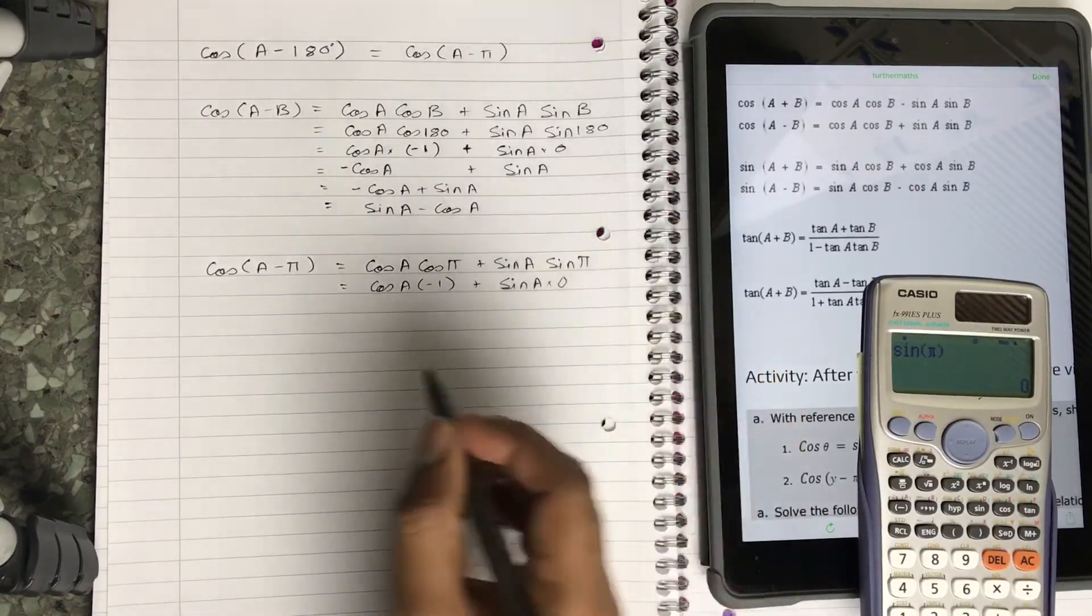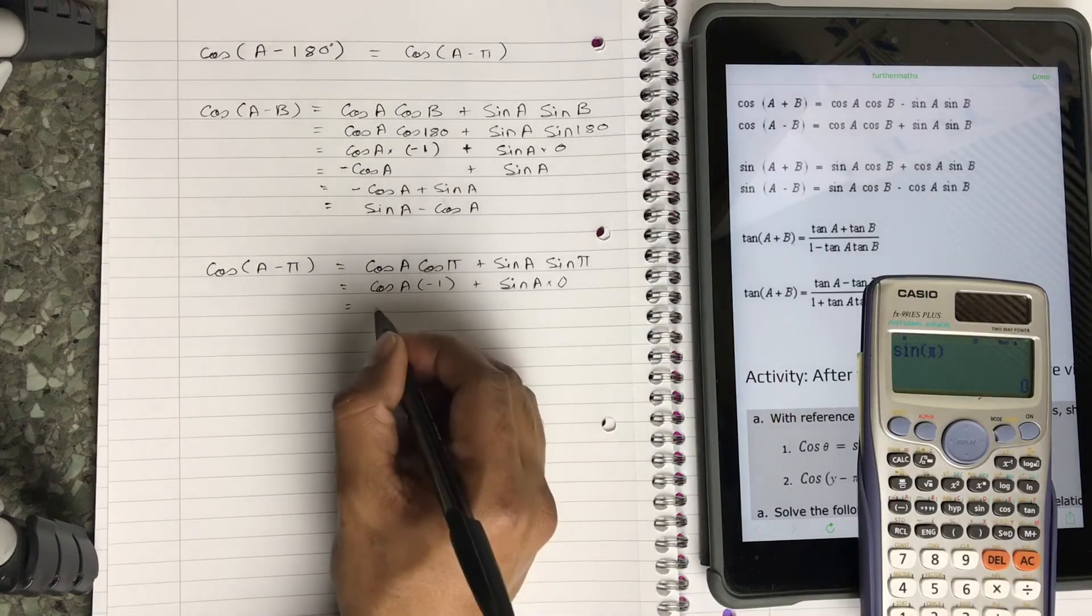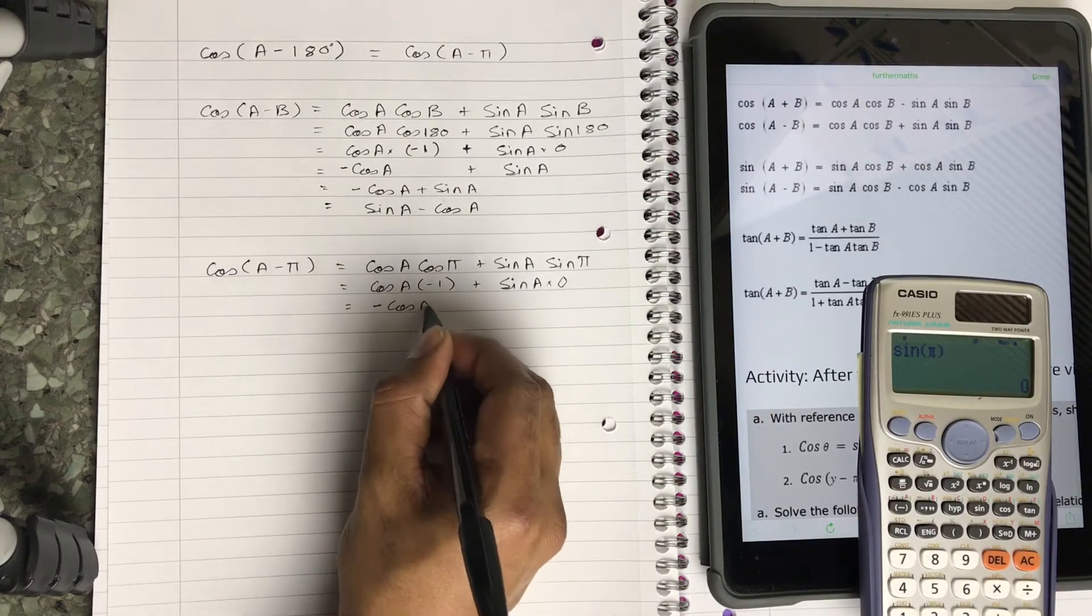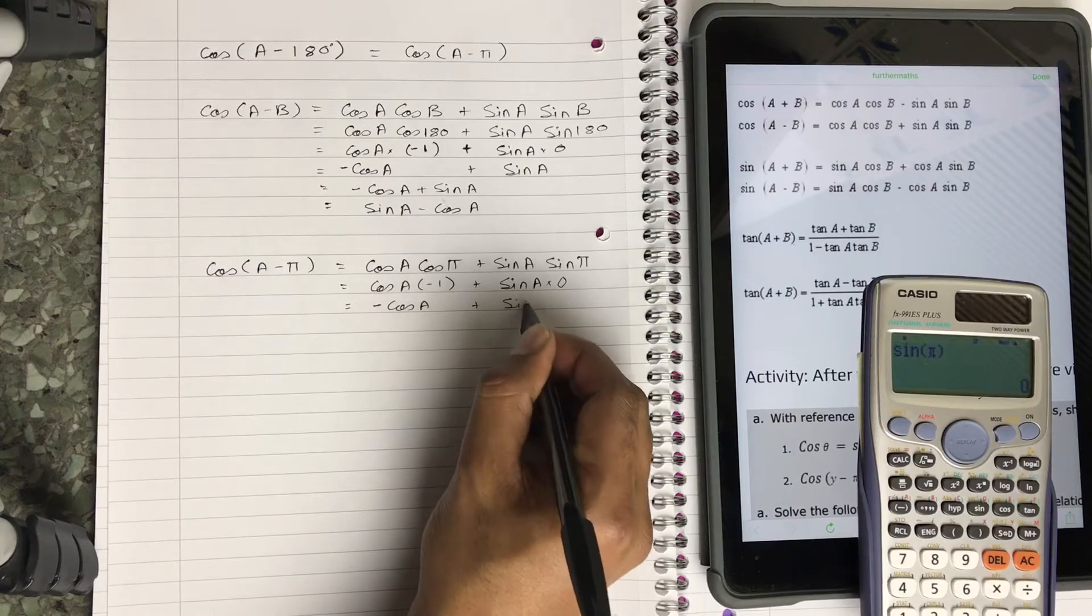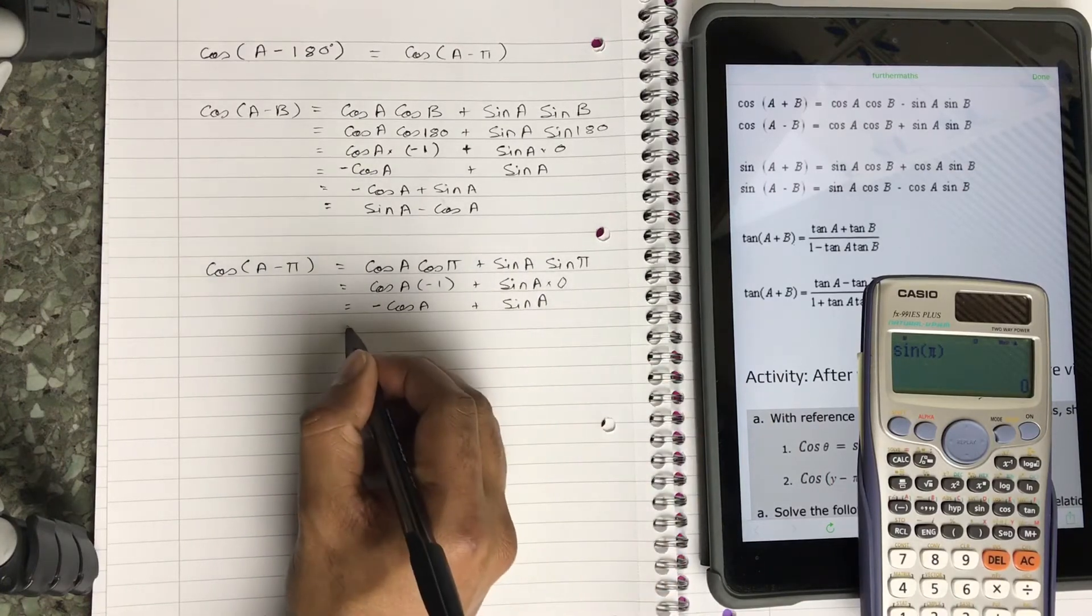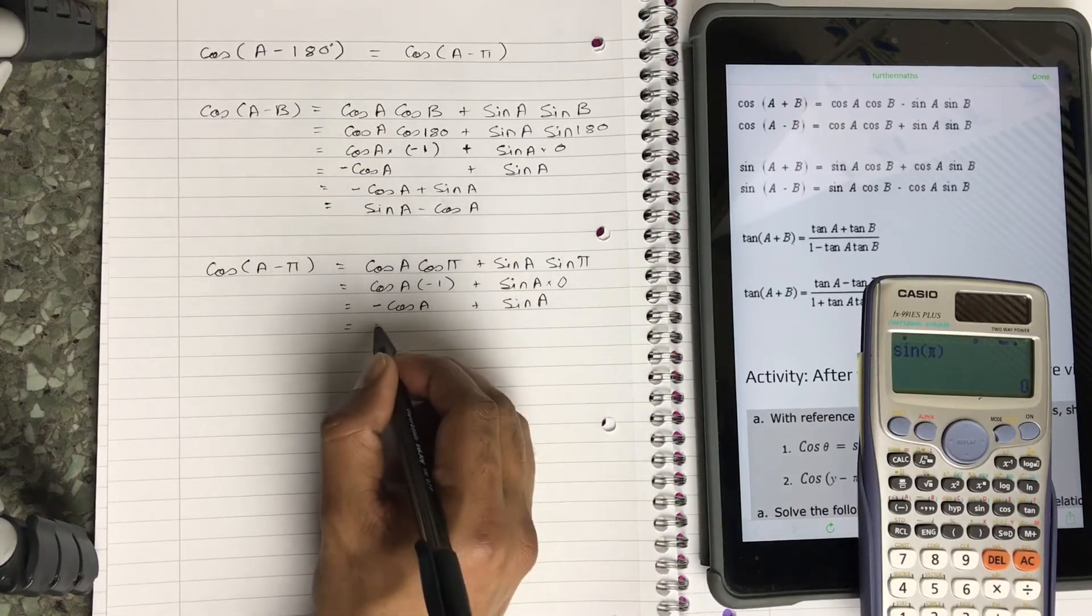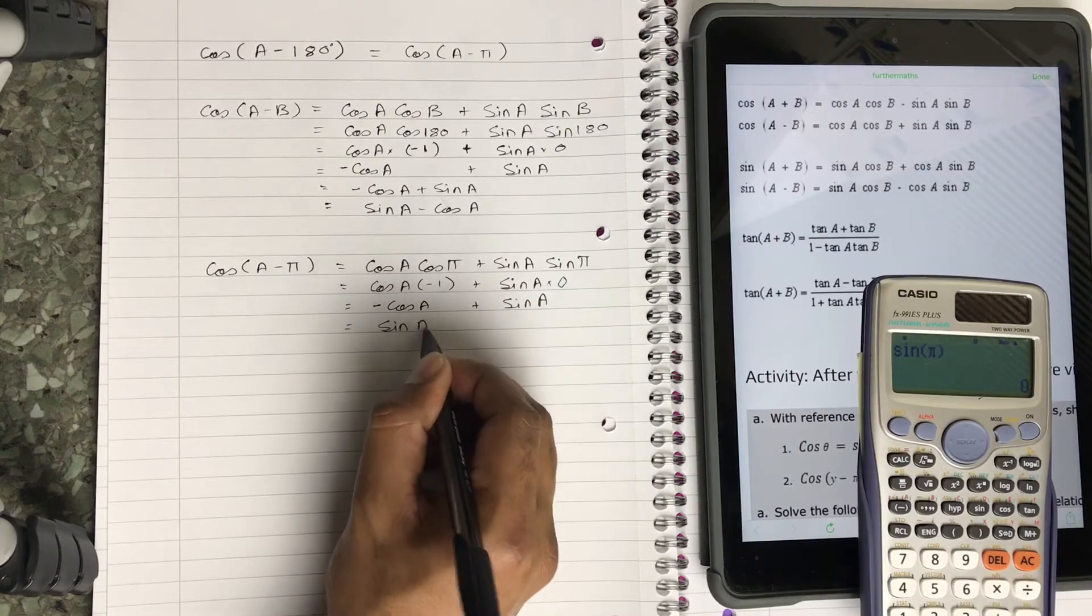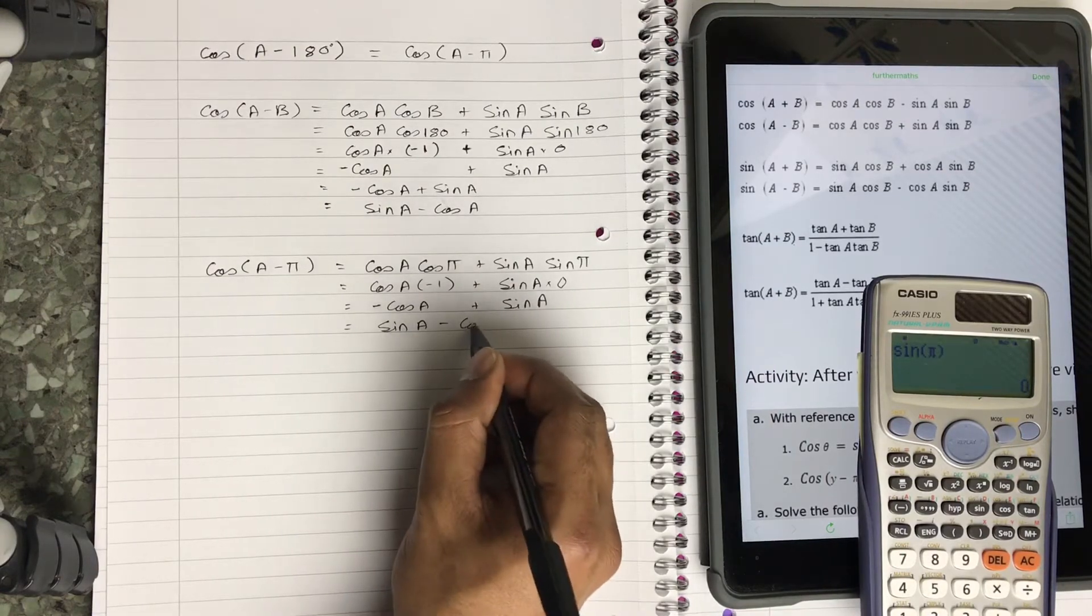That's going to be equal to -cos(A) + sin(A), or it's the same as sin(A) - cos(A).